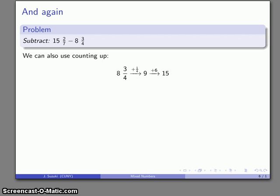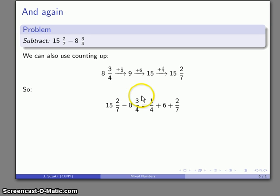Plus 6 takes me to 15. Plus 2/7 takes me to my final answer, 15 2/7. And how far did I count up? Well, it's 6 plus a quarter plus 2/7. And once again, I have this expression here that I can add as a set of fractions and get my final answer, 6 and 15/28.